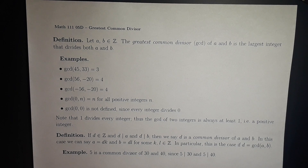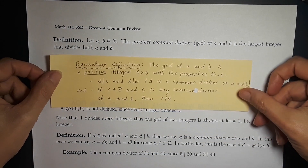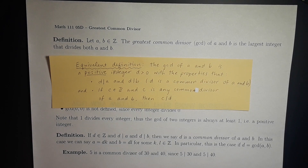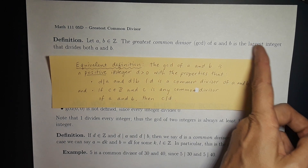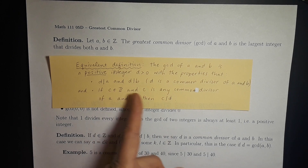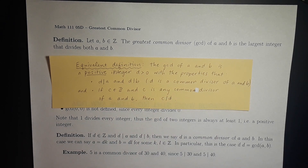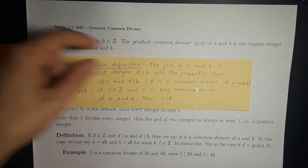There is an equivalent definition of the greatest common divisor that appears in some sources, and we will prove later in the course that these are equivalent. An equivalent definition is that the GCD of a and b is a positive integer d that is a common divisor of a and b, and for any common divisor of a and b, that common divisor divides the GCD. So instead of referring to the largest integer, it says any other common divisor must divide the GCD, and it turns out these definitions are equivalent.